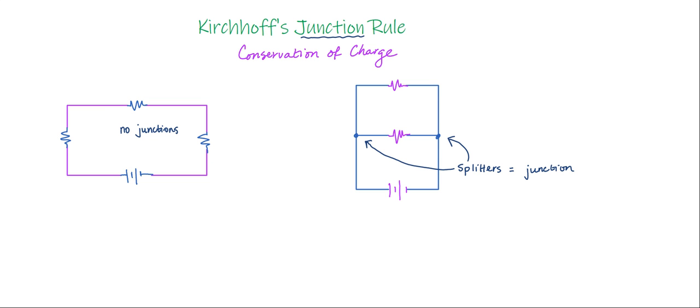So basically what this statement says is that if I name the current in each of these wire branches, as we call them, between the different nodes, I will name them. Let's call this one over here I1. I would then call this current over here I2, let's say, and then this current out here on this outer branch as I3.